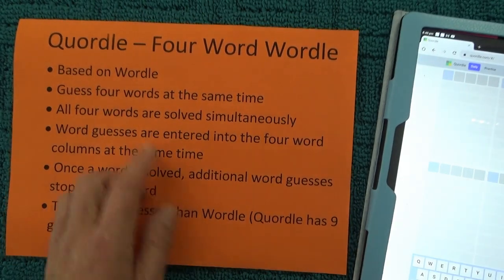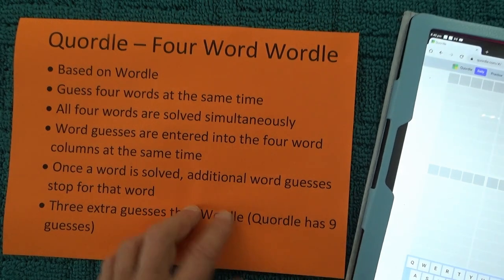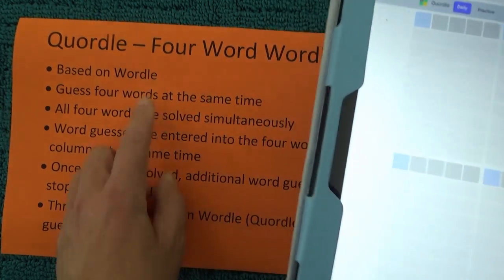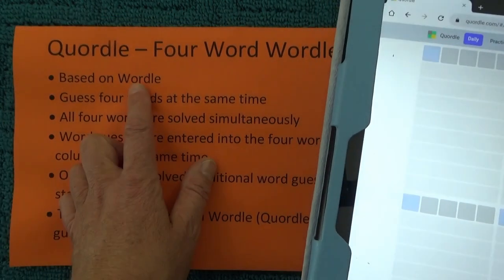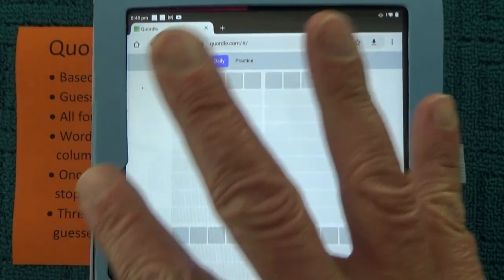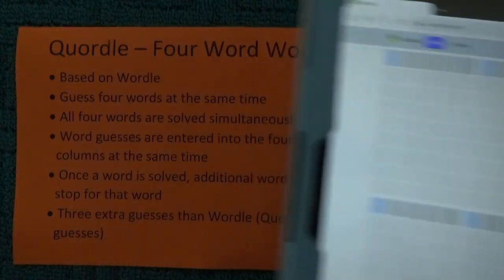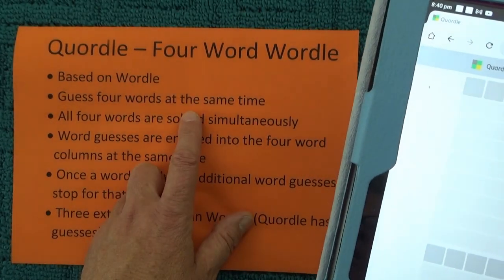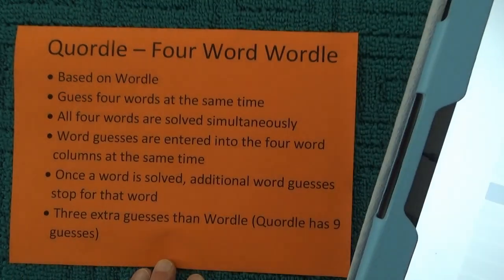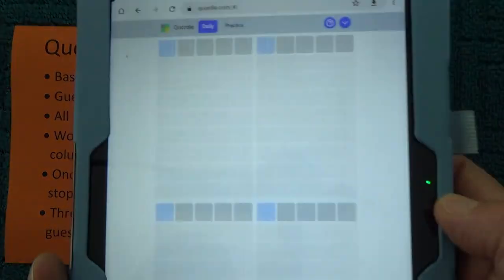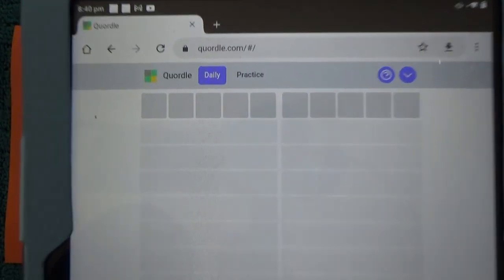Today I'm going to show you a great game called Quartle, which is based on Wordle and is basically a four-word Wordle. With Wordle you've got to find the mystery five-letter word. With Quartle you've got four of those five-letter words to find, four different words. You guess four words at the same time and all four words are solved simultaneously, entered into the four word columns at the same time.